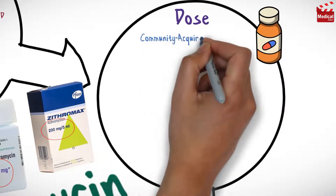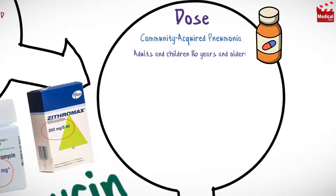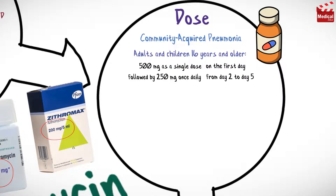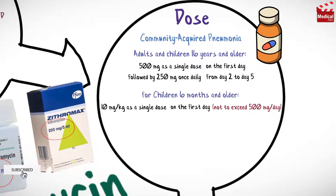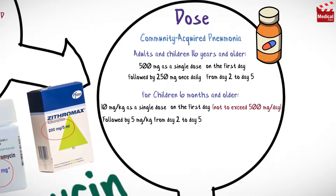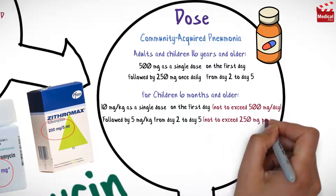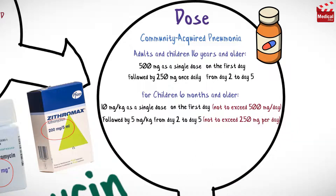The usual dosage for community-acquired pneumonia for adults and children 16 years and older is 500 milligrams as a single dose on the first day, followed by 250 milligrams once daily from day 2 to day 5. For children 6 months and older: 10 milligrams per kilogram as a single dose on the first day, not to exceed 500 milligrams per day, followed by 5 milligrams per kilogram from day 2 to day 5, not to exceed 250 milligrams per day.